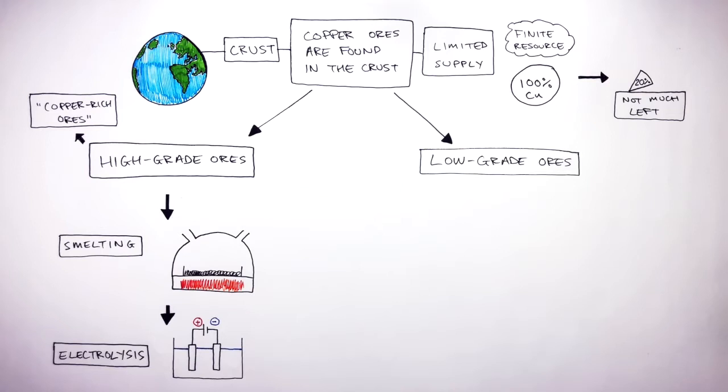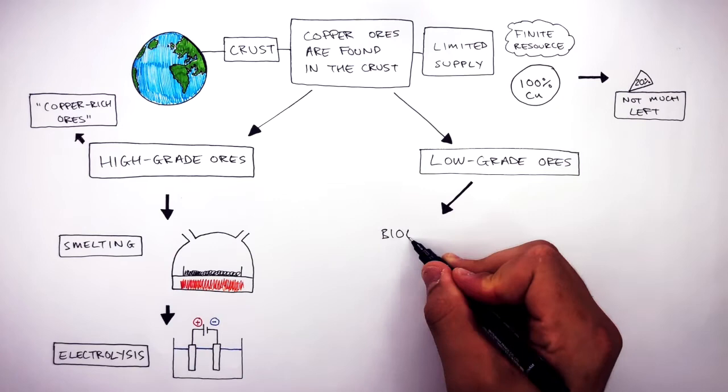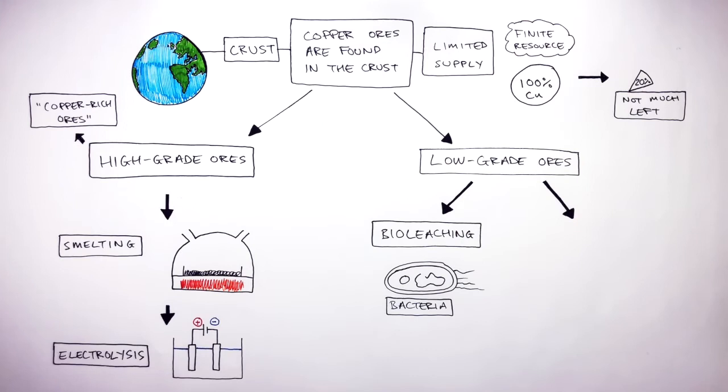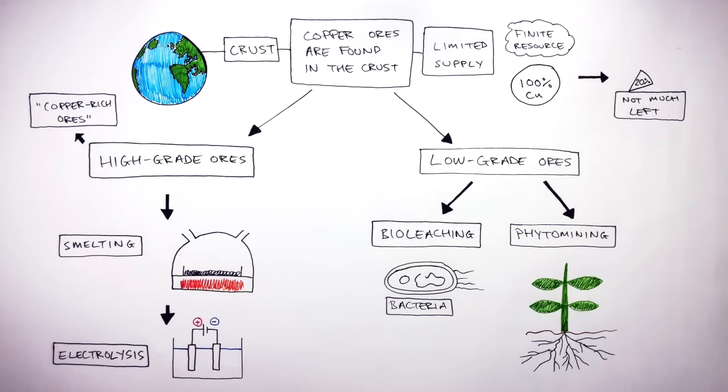Two techniques used to extract copper from low-grade ores are bio-leaching, which involves the use of bacteria and other microorganisms, and phytomining, which involves the use of plants. In this video, we're going to focus on how phytomining is used to extract copper from low-grade ores.